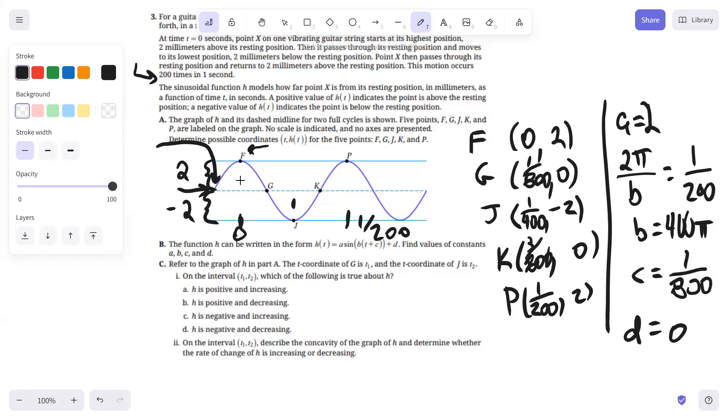Part C, refer to the graph of H in part A. The T-coordinate of G is T1 and the T-coordinate of J is T2. So we're talking about G and J on the interval T1 to T2, which are the following true about H. Well, H would be negative on that interval because this line, midline, corresponds to H equals zero. So it's not going to be positive. Also, the function is decreasing between G and J. So H is negative and decreasing.